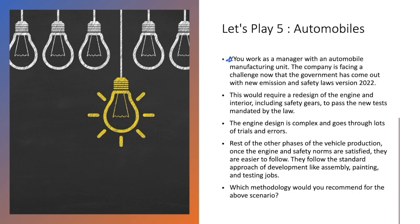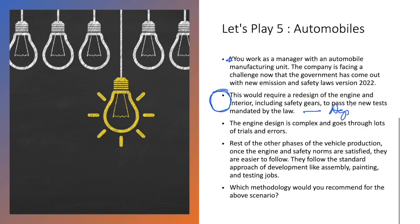Scenario five: you work as a manager at an automobile manufacturing unit. The government has issued new emission and safety laws requiring a redesign of the engine and interiors. The engine design is complex and goes through many trials and errors. Once engine and safety norms are satisfied, the rest of vehicle production follows a fixed standard approach like assembly and painting. The engine redesign phase requires many iterations and revisions — use agile. The remaining phases are predictive. This is a classic case of hybrid methodology.